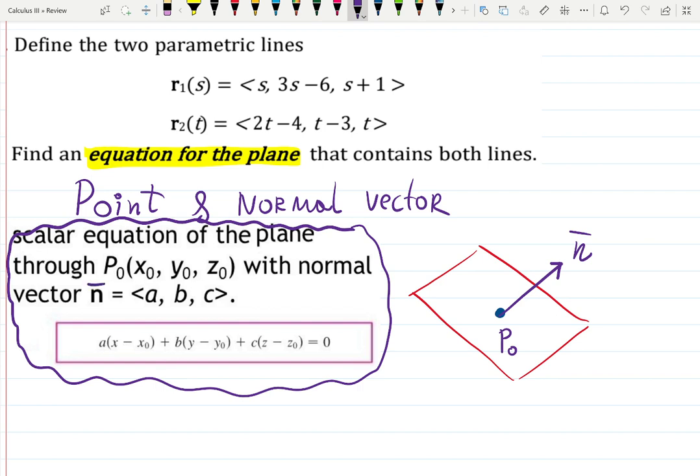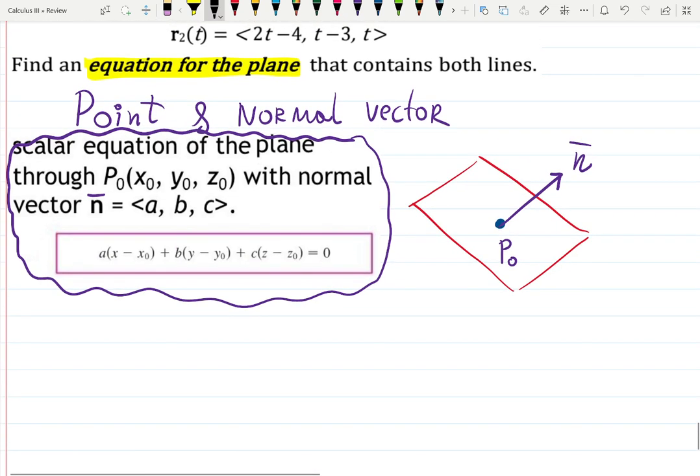So a comes from the normal vector, b and c as well. And then x minus x₀ which is your point, y minus y₀ which is a point, z minus z₀ which is the point, equals to zero. This is one of the ways to write down the equation of the plane.